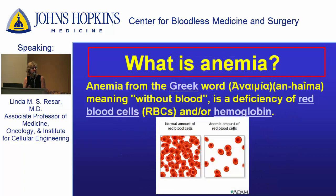Let's start by defining anemia. What is anemia? Anemia actually comes from the Greek word — please pardon me, those of you who really can speak Greek — but it's called anhema, which means without blood or bloodless. Basically that means a deficiency of the red blood cells or the hemoglobin, which is the protein within the red cells that actually carries oxygen to all of our tissues and organs.